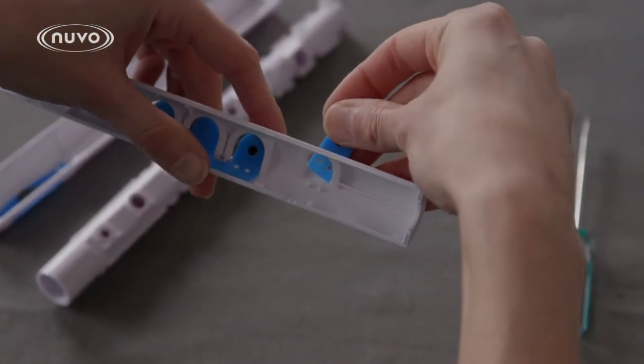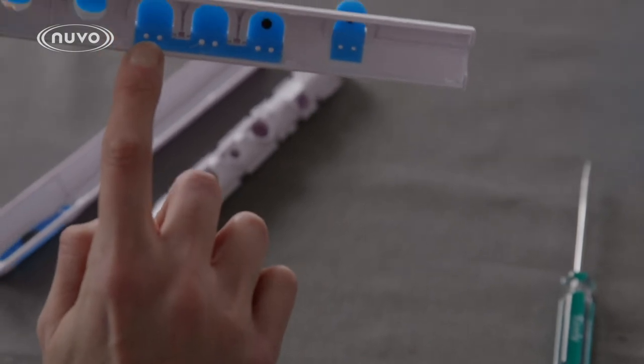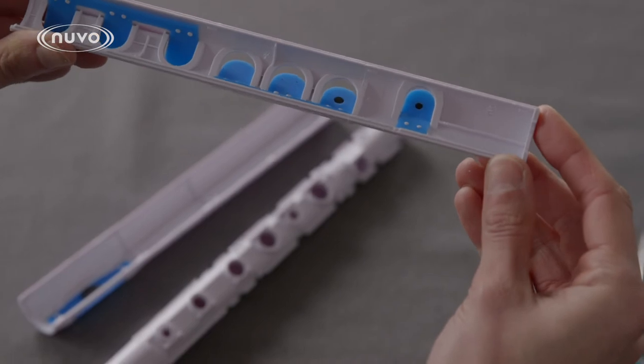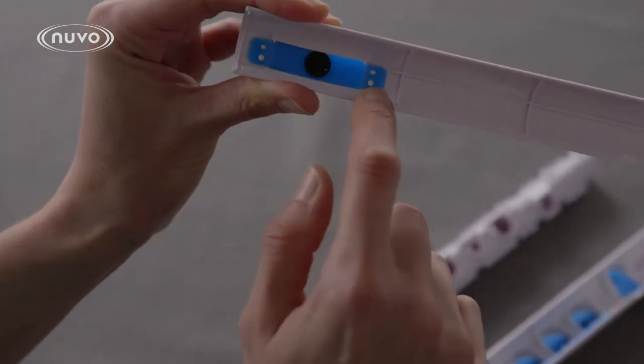To place a new key, simply insert and press firmly on the two joints to help it attach. Check to make sure that all keys are firmly attached before putting the toot back together. You can also replace the thumb key in the same way.